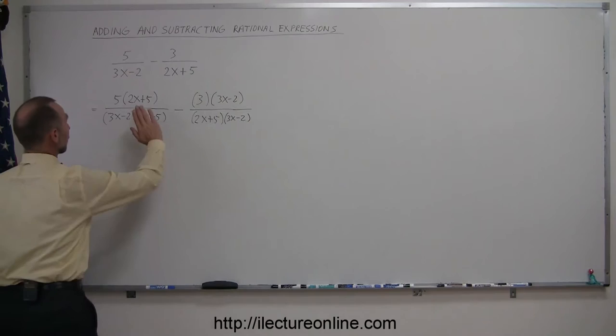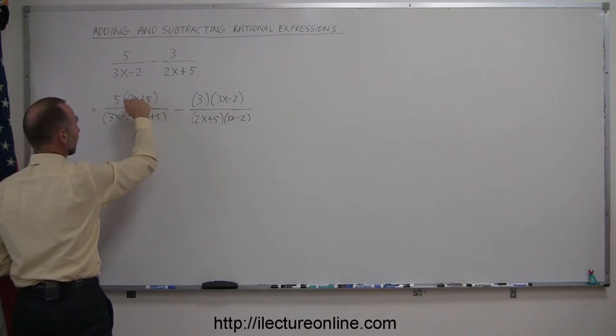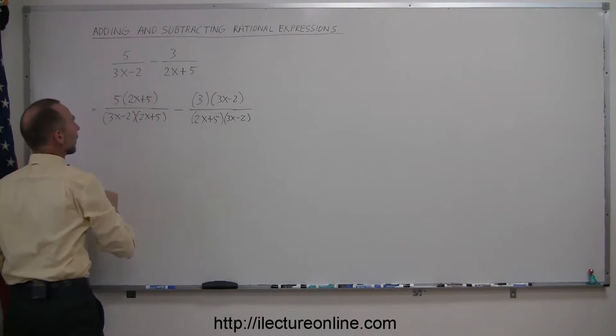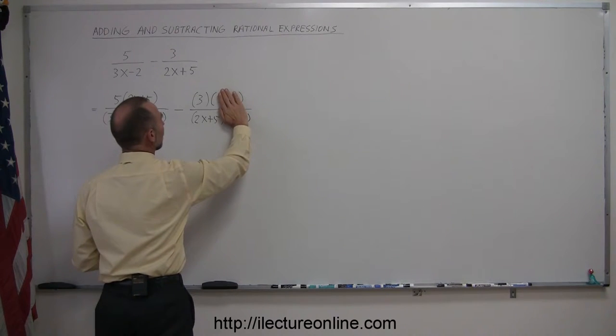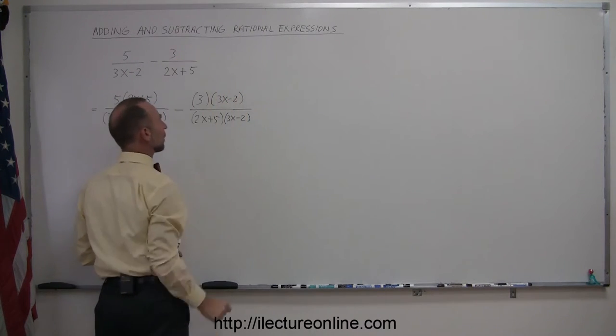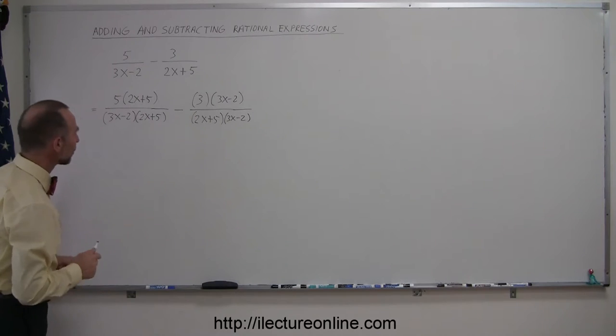Always a good check is that if you were to eliminate those, because 2x plus 5 can be cancelled out with 2x plus 5, you would end up with what you started with there. And if you eliminate those, then you can see that you end up with what you started with there, so you're still on the right track, no mistake so far.